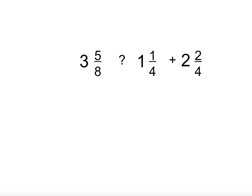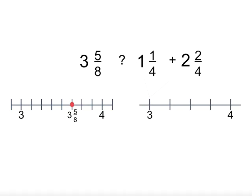Let's try another. We have three and five-eighths which is there. And now on the other side when we add one and two we get three. Then one-quarter plus two-quarters is three-quarters. So the answer is three and three-quarters.